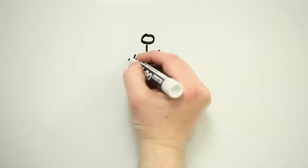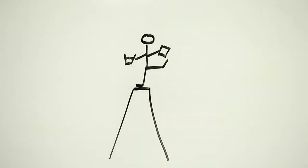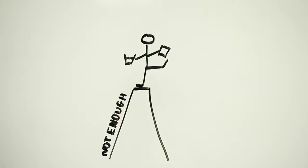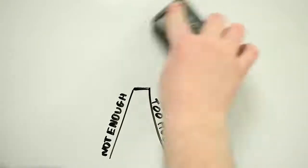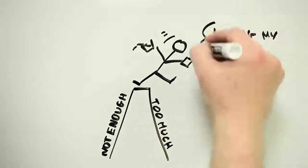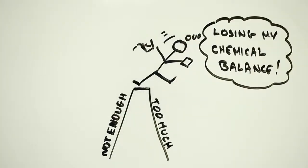To stay alive and thrive, our bodies pull off an incredible balancing act between making use of the stuff we breathe and eat and are otherwise exposed to, and making sure it doesn't kill us. The trouble is, it's a balancing act that can too easily be disrupted. Too much or too little of something and the whole system begins to get out of whack.